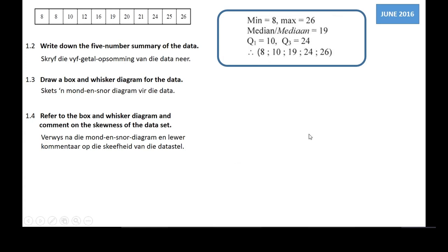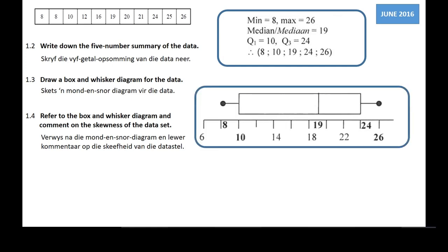Now they want us to draw a box-and-whisker diagram. As stressed before, you must start with a number line with equal divisions. They use 6, 8, 10, 12, 14, etc. You plot your smallest value above 8, Q1 at 10 with a vertical line, and indicate all values on your number line — give as much information as possible. Write down the values for minimum, Q1, Q2 (19), Q3 (24), and maximum (26).